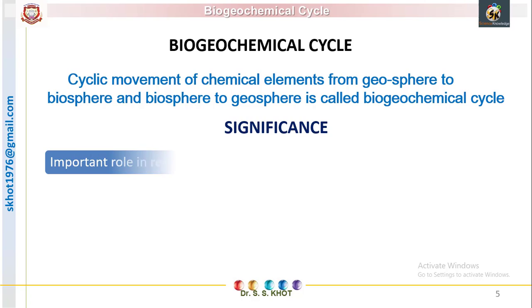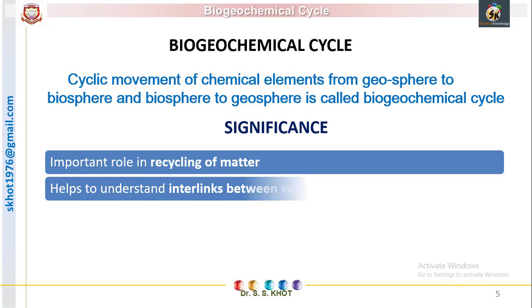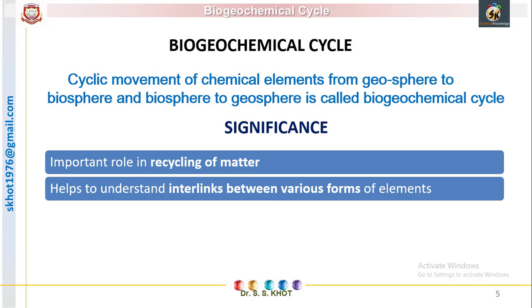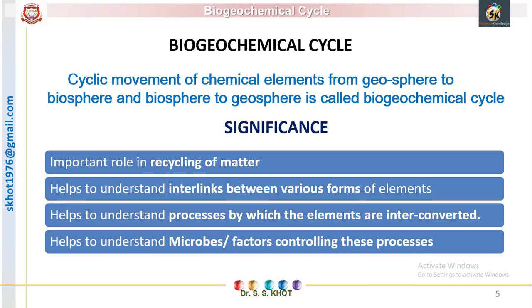Now, what is the significance of this study? Biogeochemical cycles play an important role in the recycling of matter — chemical elements are recycled back to the atmosphere or to their reservoir. They help us understand the interlinks between various forms of elements, since these elements are converted into various molecules during their transfer from producers to consumers and back to the atmosphere. They also help us understand the processes of fixation, interconversion, and release into the atmosphere, and which biotic or abiotic factors control the interconversion of these molecules.